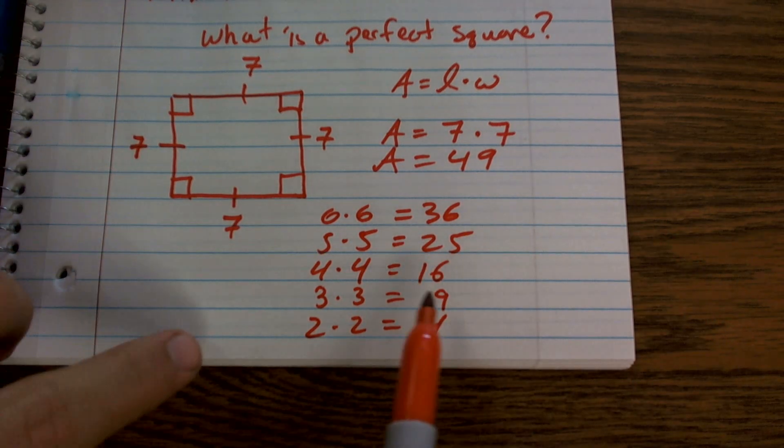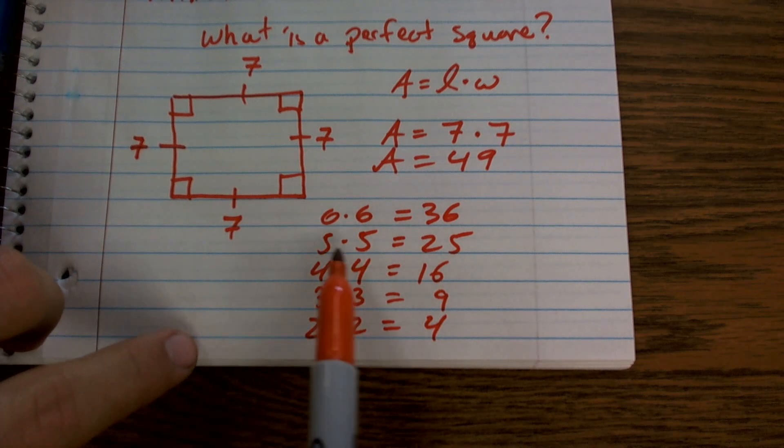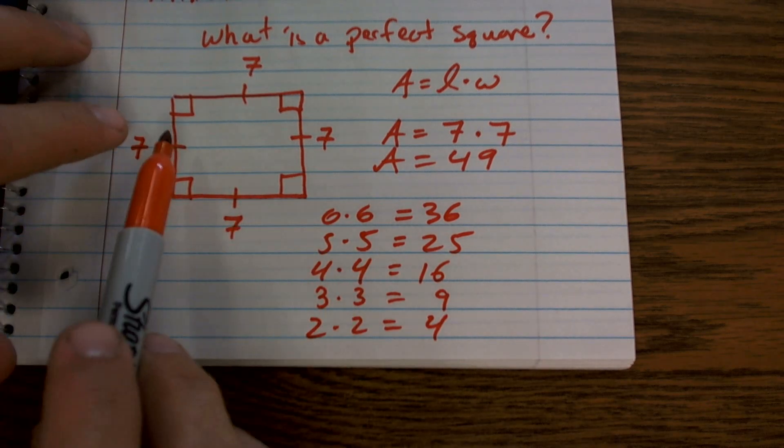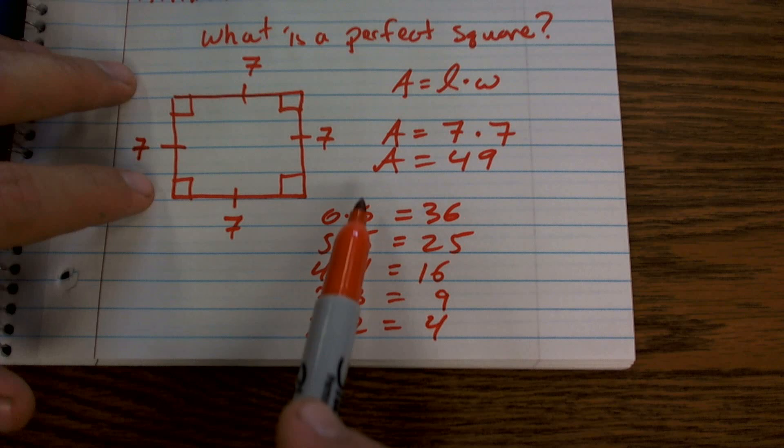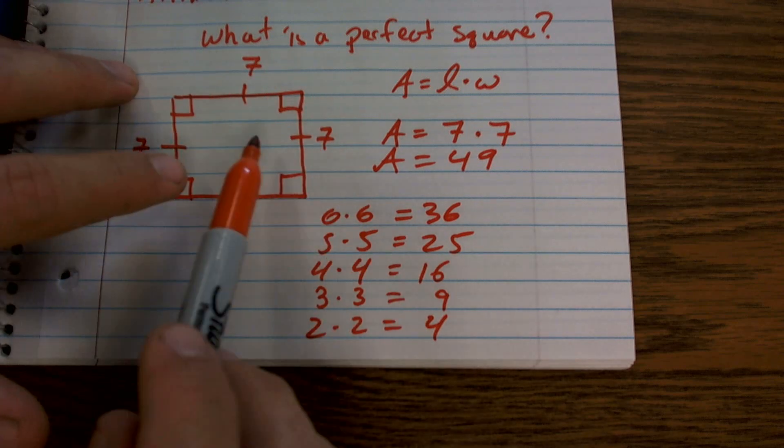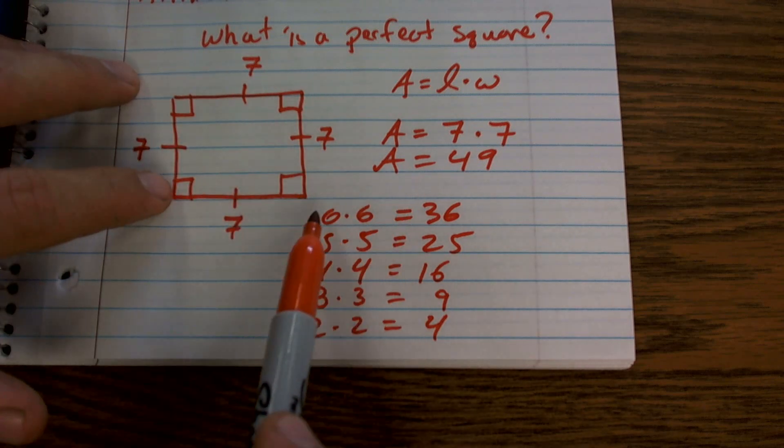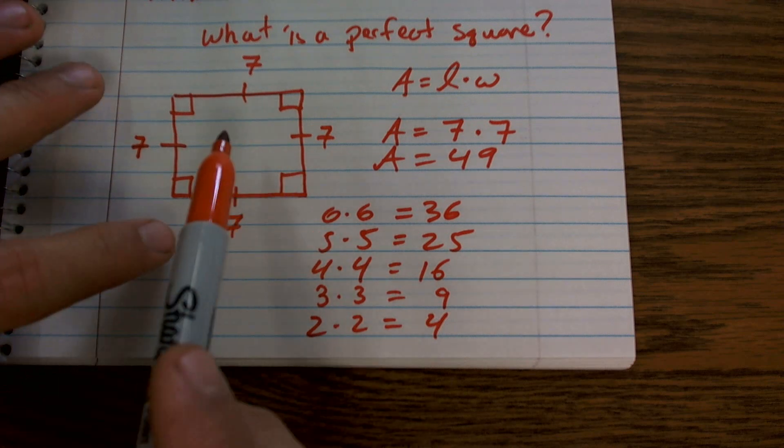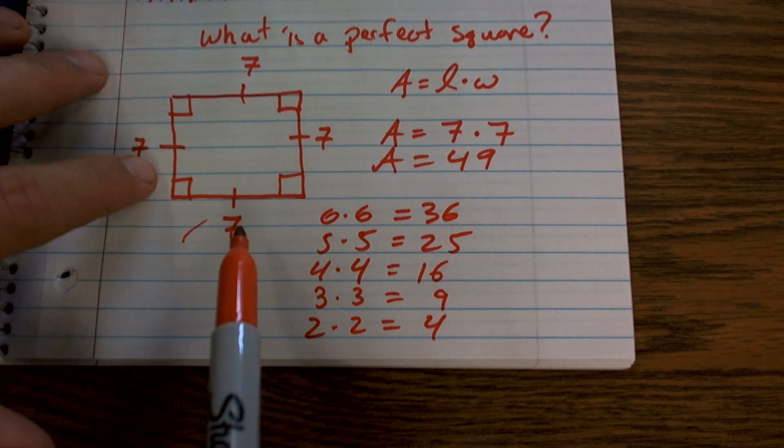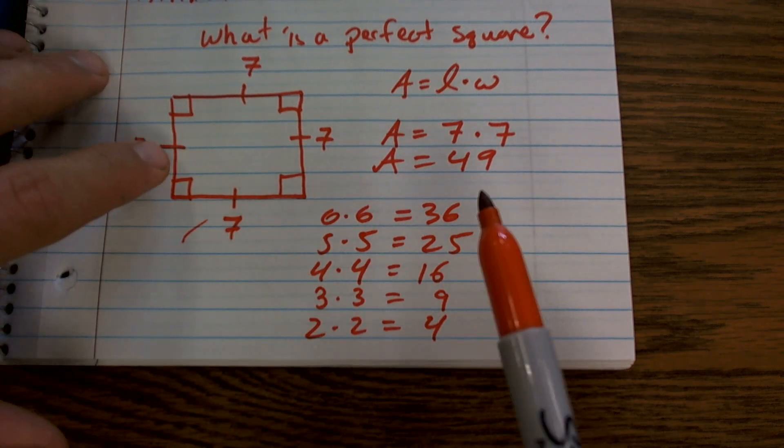Again, they're perfect squares because their side lengths make up a square. Because if you have your two that are going to be the same, to find the area they're all going to be the same. So therefore, they make a perfect square. If they weren't all the same, then it wouldn't be a square, it wouldn't be perfect. So when you have your two side lengths that are exactly the same, you create a perfect square.